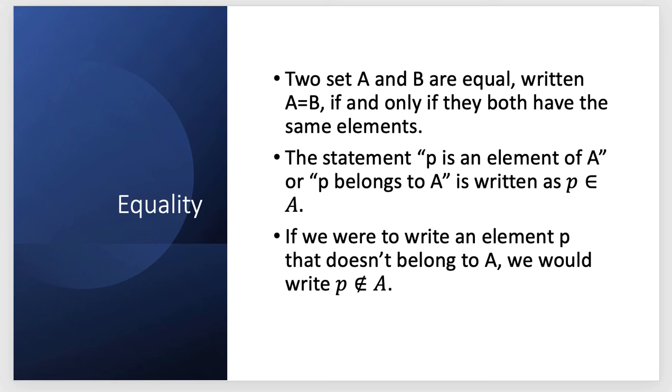The statement 'p is an element of A' or 'p belongs to A' is written as p ∈ A. This can be extended to multiple elements. If we were to take elements p and q both belonging to A, we would write p, q ∈ A. And if we were to write an element p that doesn't belong to A, we would write p ∉ A.